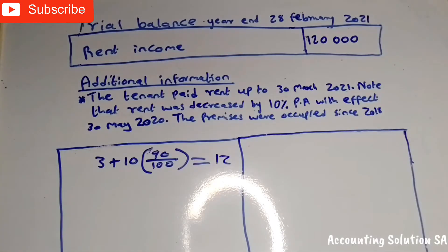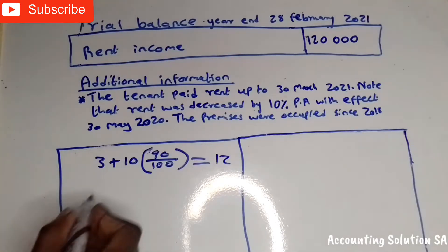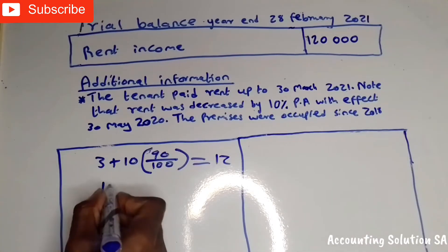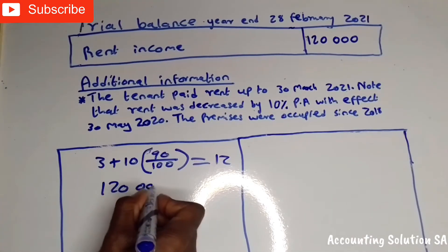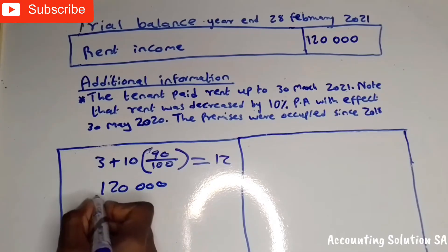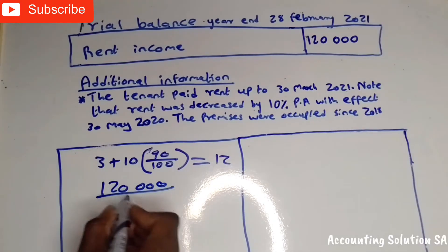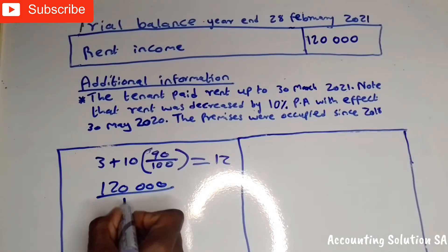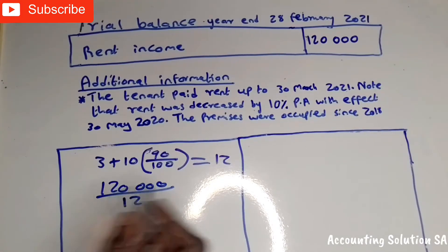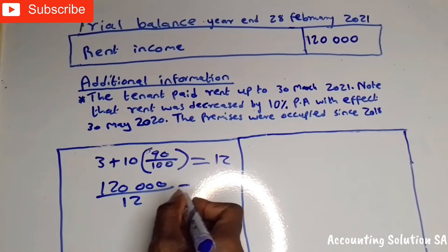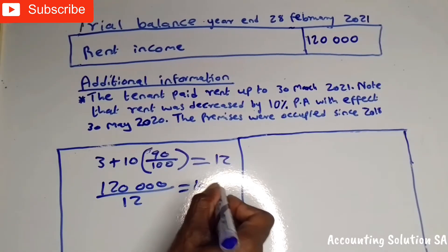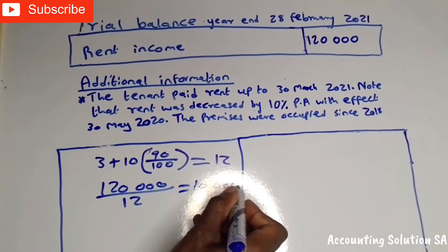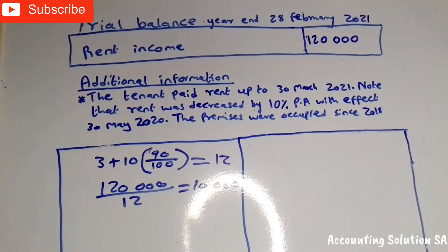So we calculate: 120,000 divided by 12, which gives us R10,000. This is the monthly rent amount before the decrease.